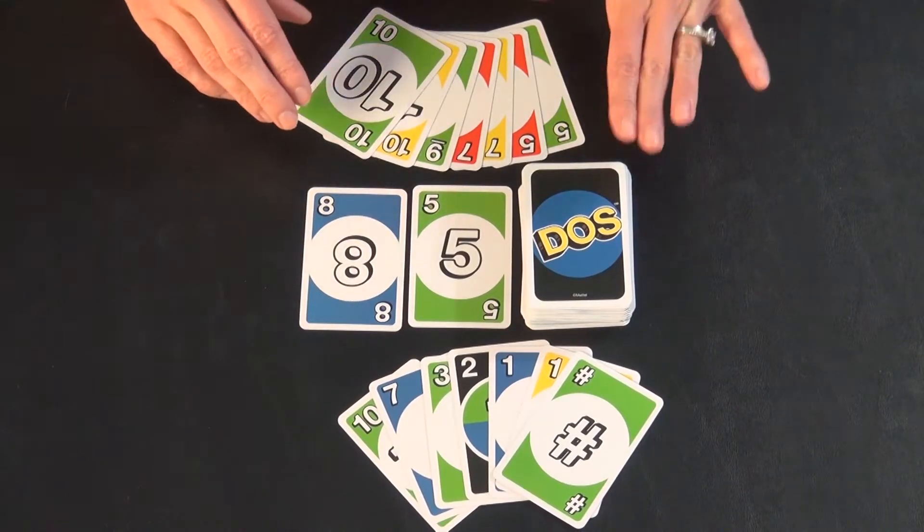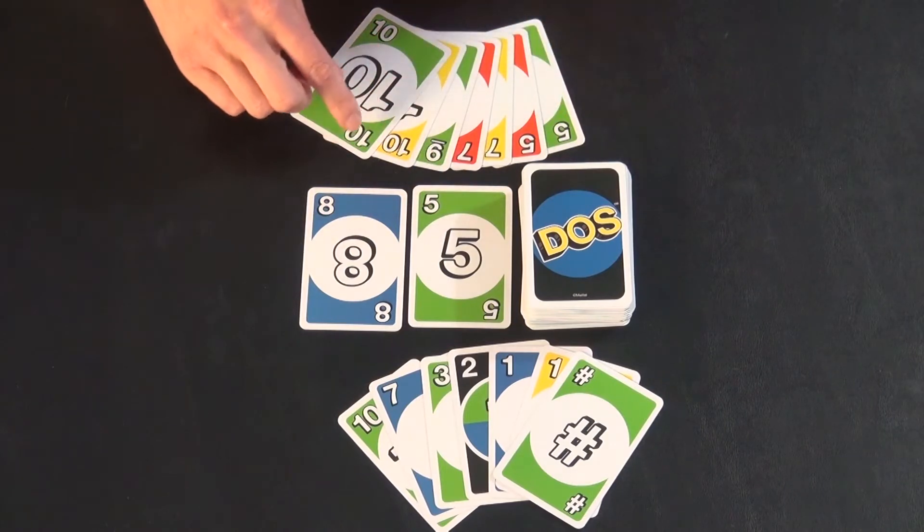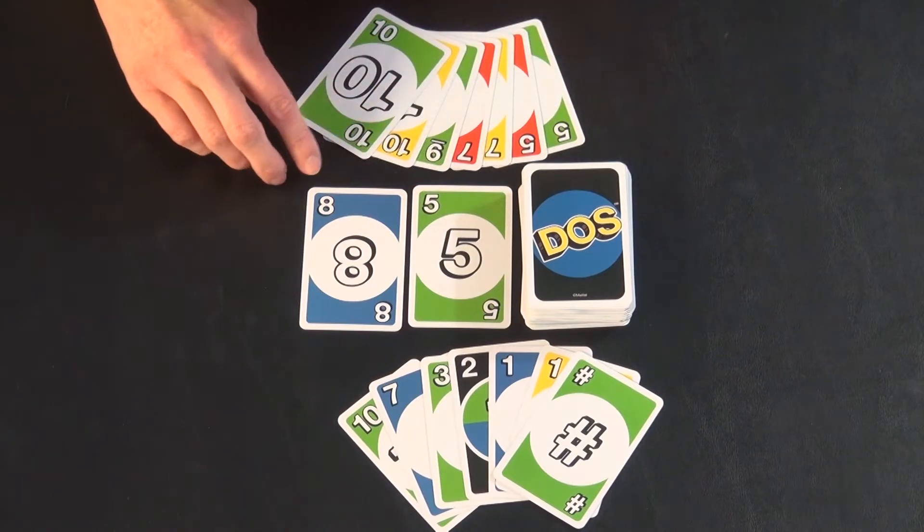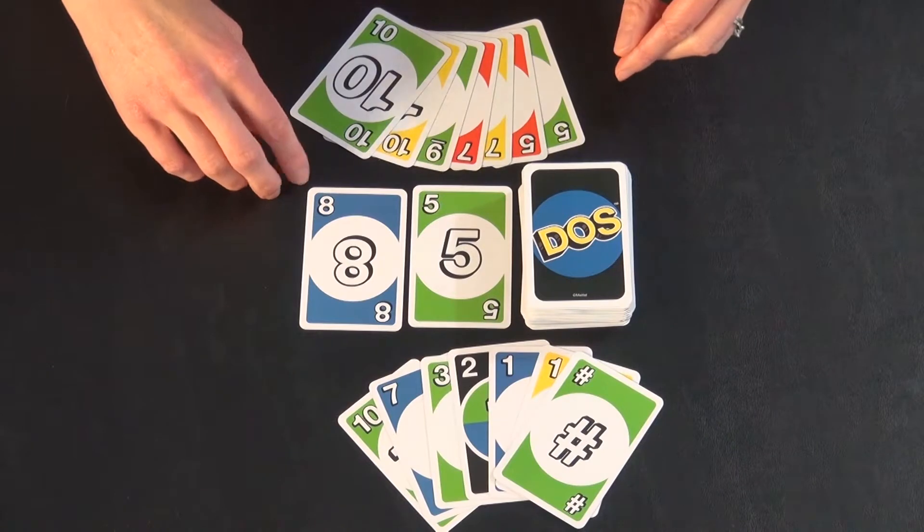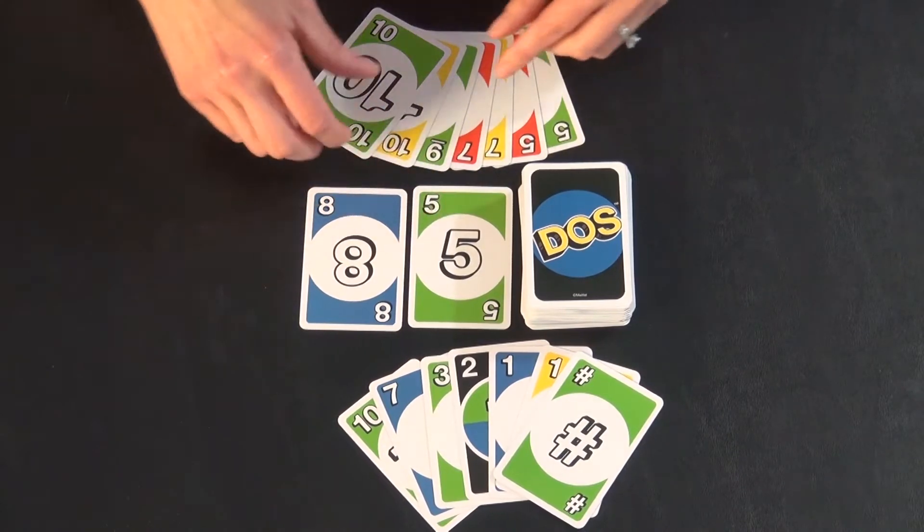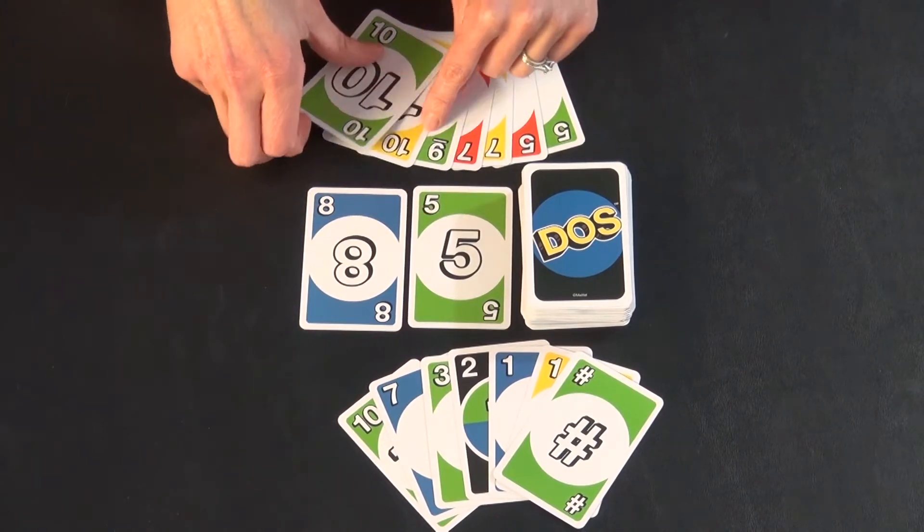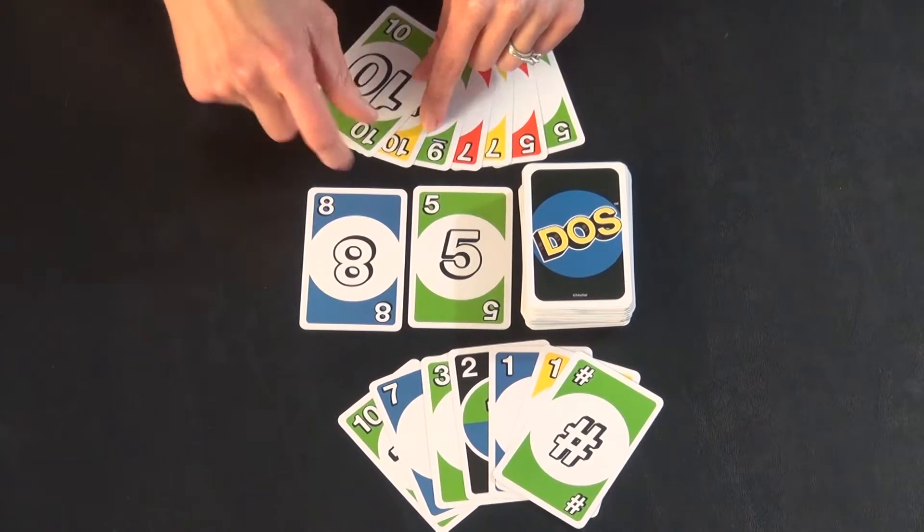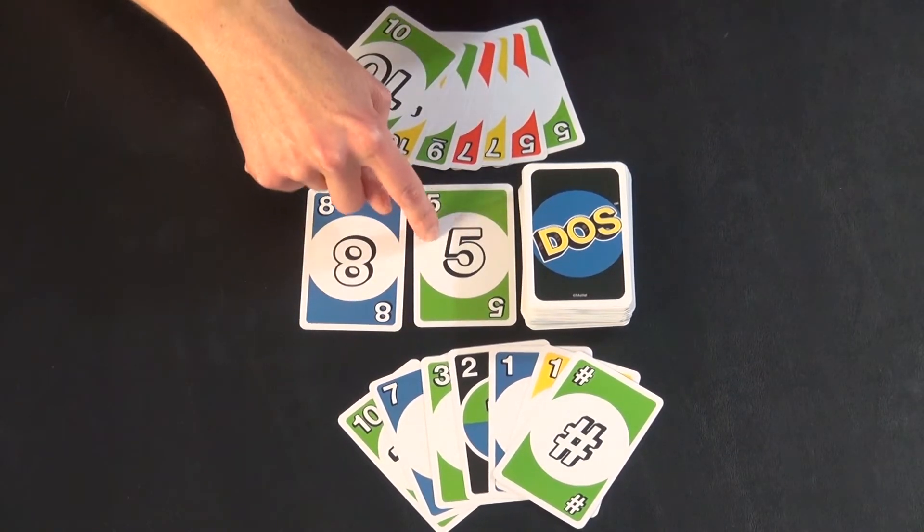The trick with DOS is that number is what matters, and color is secondary. So there's a five and an eight out here. Even though there's a green nine and a green ten here, you can't play either of them on this five. It has to be a five.